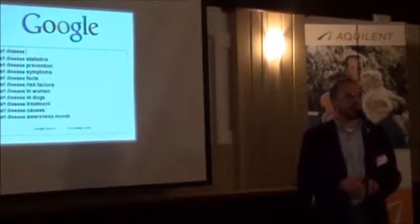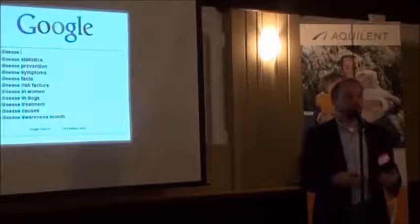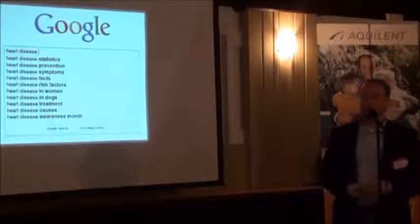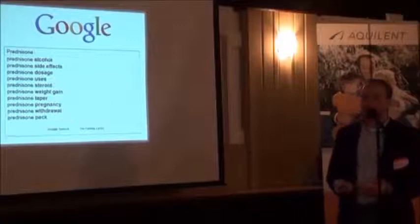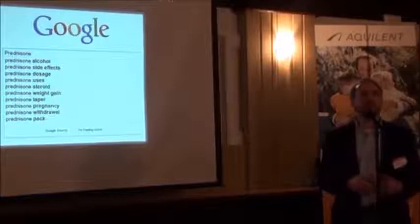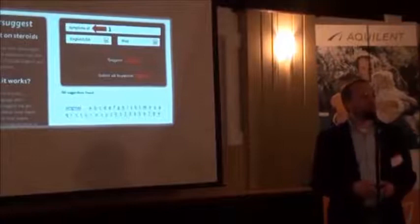The first tool, and easily my favorite, is Google Autocomplete. Basically how this works is you go to the search engine and you start typing and suggestions appear. My recommendation would be if you're looking for the most popular facets for a condition name, simply type in the condition name and Google will present the ten most popular facets for that condition. Likewise, if you want to know the most popular facets for a treatment name, just type in the treatment — in this case, prednisone — and you can see facets like side effects and dosage show up as some of the recommended facets.